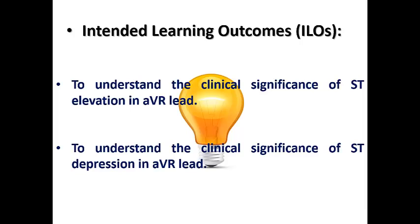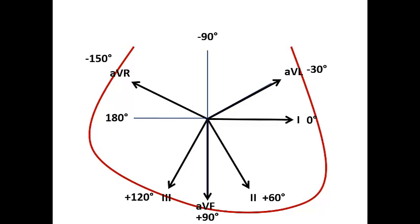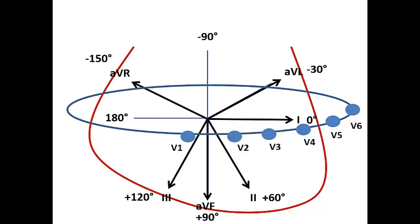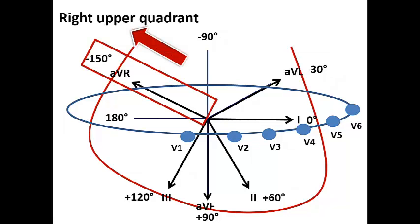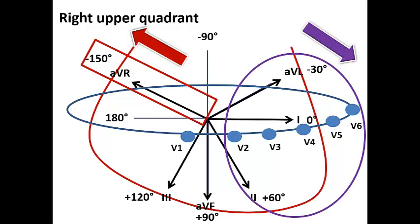Regarding myocardial ischemia, we remember this diagram — this is a heart and we have the six limb leads looking at the heart in a frontal view: leads 1, 2, 3, AVL, AVF, and AVR. We also have the six precordial leads looking at the heart in a coronal view. AVR is the only lead in the right upper quadrant with an angle of minus 150 degrees. The electrical activity of most of the heart is directed towards the positive poles of most other leads like AVL, 1, 2, AVF, and lead 3, whereas AVR is away from the electrical activity.